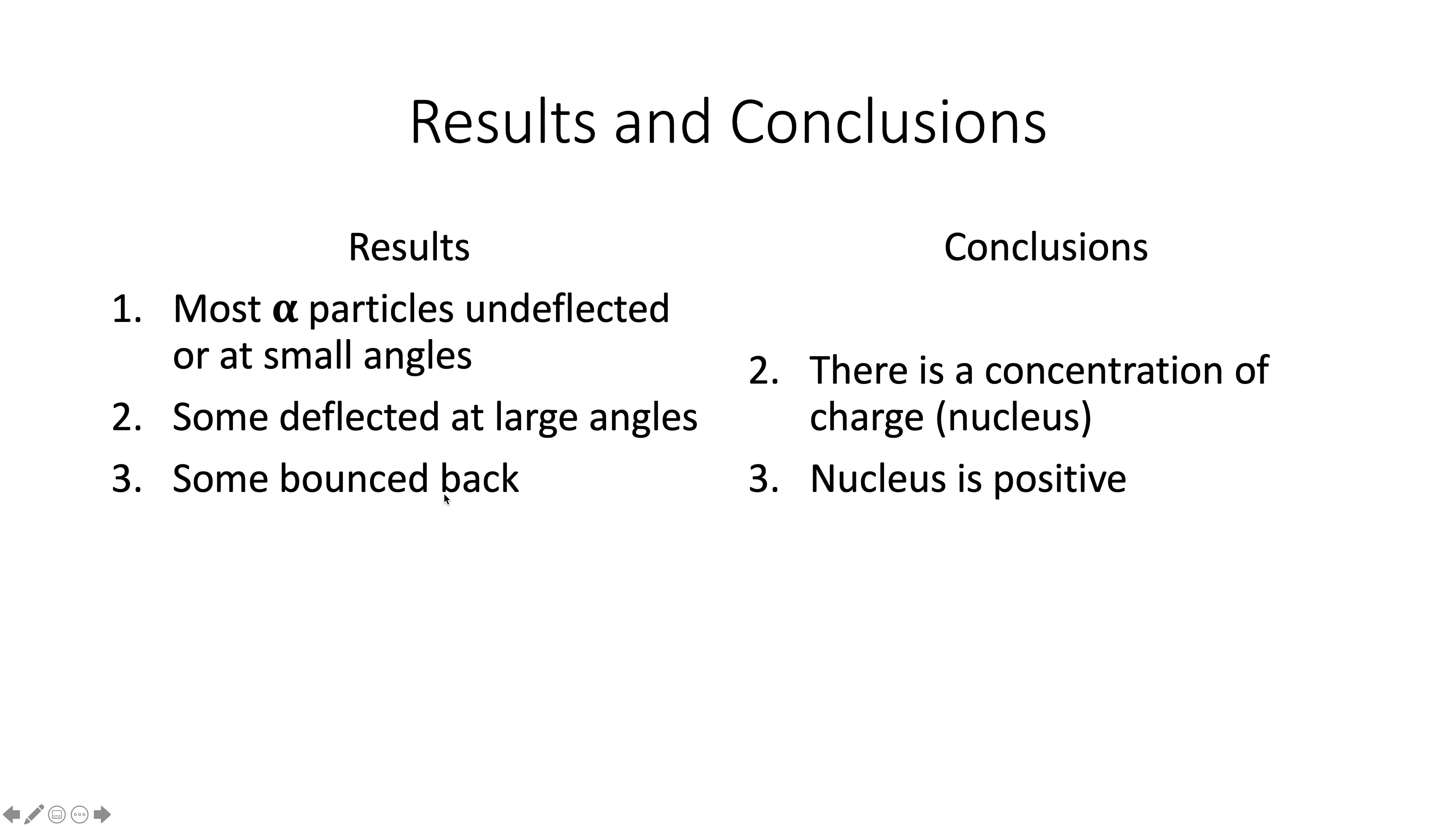The fact that some bounce back tells us that the nucleus is positive. So what this means is some of the alpha particles hit the nucleus, and therefore, the positive and positive would push each other away. If the nucleus was negative, you would expect some of the alpha particles to not come out. Now, how can you shoot a beam of positively charged particles through a field that's got big chunks of positive, and yet most of them come out at very small angles or aren't bent at all?